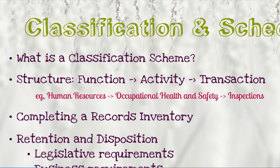Classification structures should be hierarchical, moving from the general to the specific. A good classification structure is also based on function, which gives it flexibility in the case of company reorganization. You have functions at the top, often named in a company's mandates and responsibilities. These break down into activities, which break down into transactions. An example is human resources, breaking down into occupational health and safety, and then inspections.